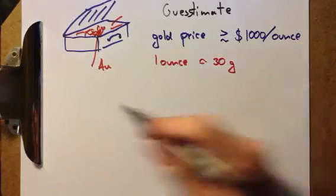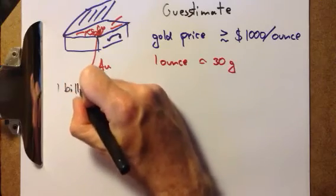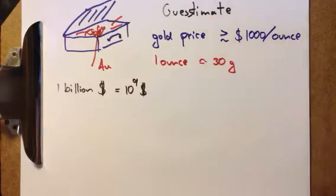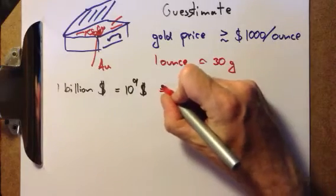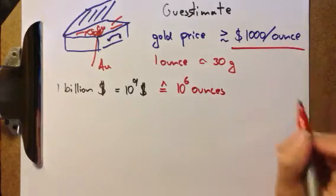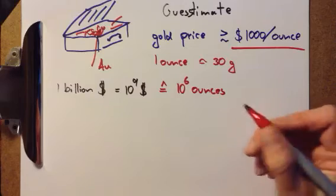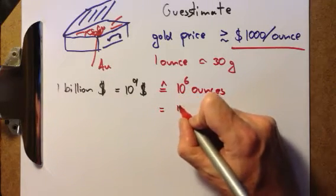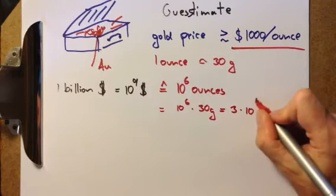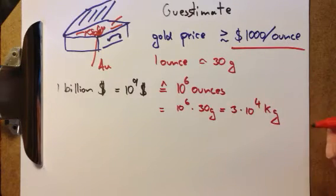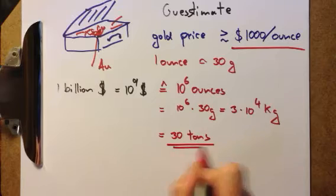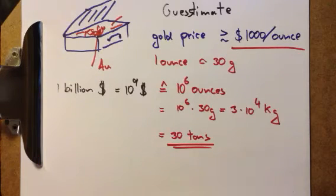We can establish the equation: 1 billion dollars, that's 10 to the 9 dollars, is equivalent to 10 to the 6 ounces. If we convert ounces into grams, we find that is equal to 10 to the 6 times 30 grams, which is, in SI units, 3 times 10 to the 4 kilograms. In other words, that's 30 metric tons — not something that can be carried in a suitcase.